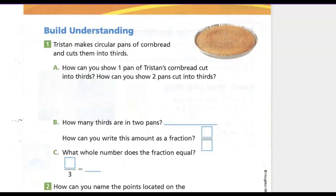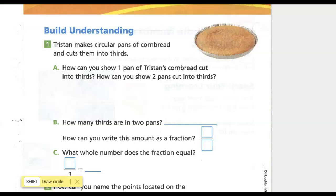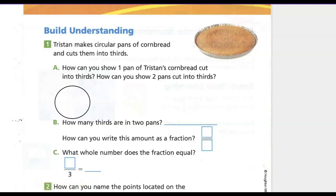Tristan makes circular pans of cornbread and cuts them into thirds. How can you show one pan of Tristan's cornbread cut into thirds? Since it's circular, we're going to start with a circle and then divide it into thirds. Thirds are a little tricky sometimes.